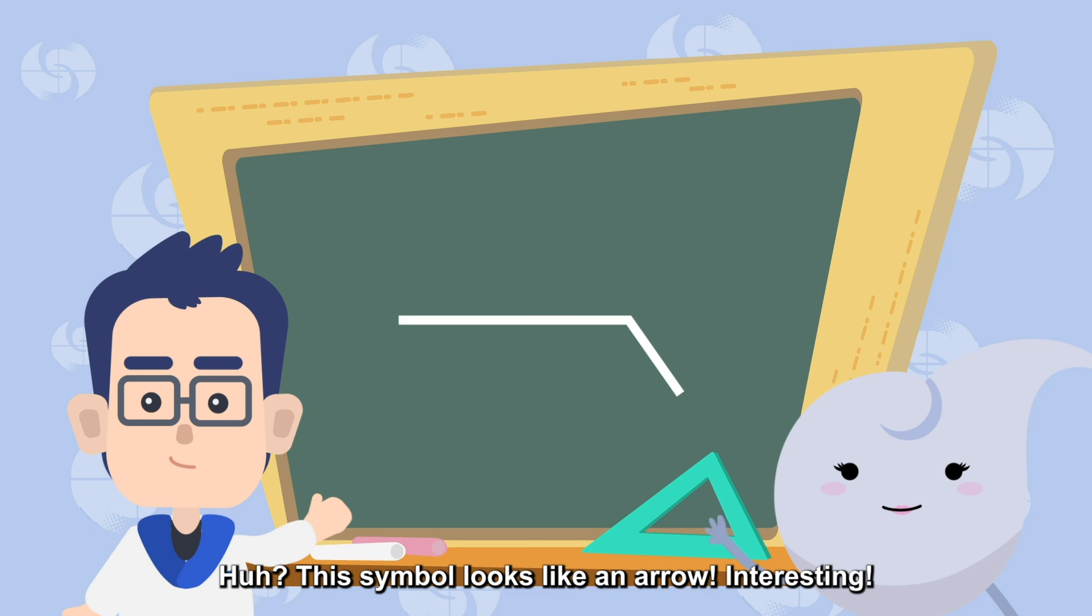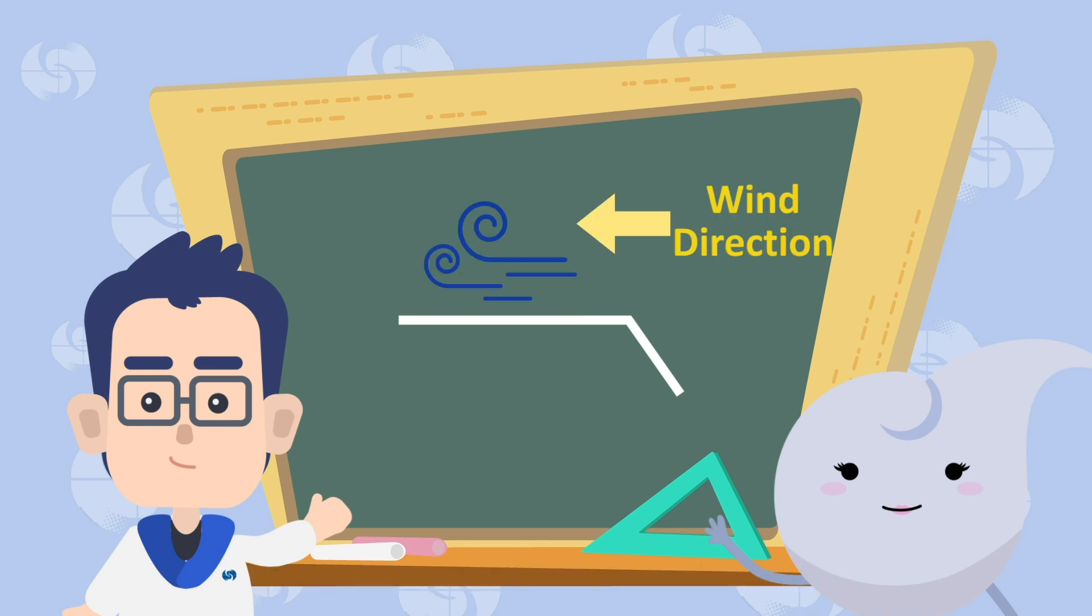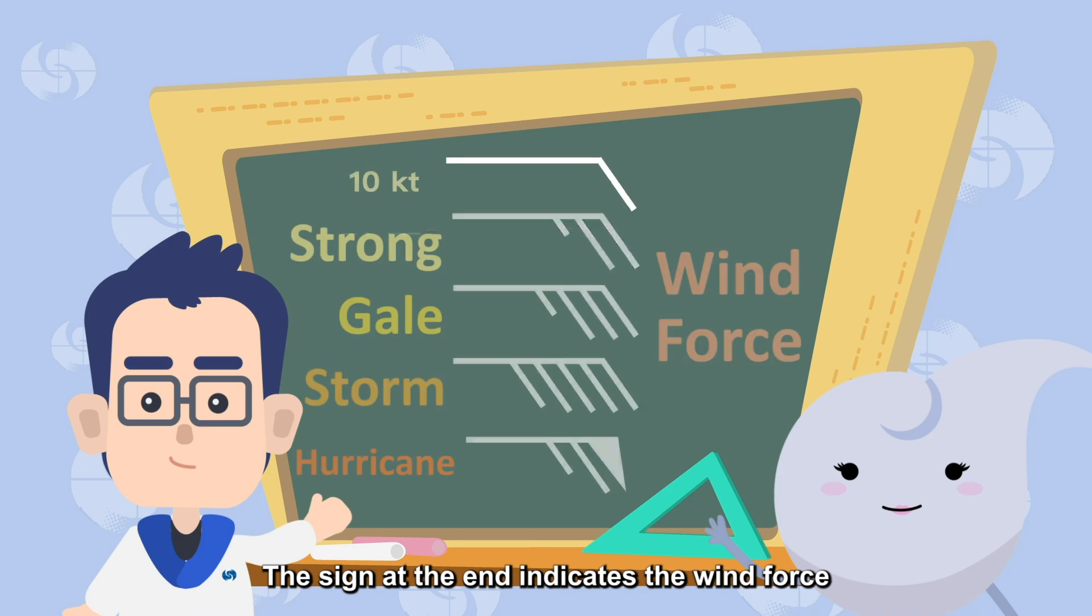This symbol looks like an arrow! Interesting! Yes, this symbol indicates the wind speed and wind direction. It's a long line with a sign at the end. The direction pointed by the end of the long line is the wind direction. For example, an easterly wind is like this. The sign at the end indicates the wind force.